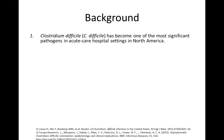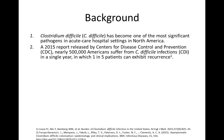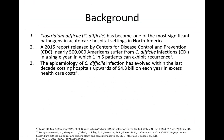C. difficile has become one of the most significant pathogens in acute care hospital settings in North America. A 2015 CDC report noted that nearly 500,000 Americans suffer from C. difficile infections in a single year, with one in five of those patients exhibiting recurrence. The epidemiology of C. difficile infection has evolved within the last decade, costing hospitals upwards of $4.8 billion each year in excess healthcare costs.